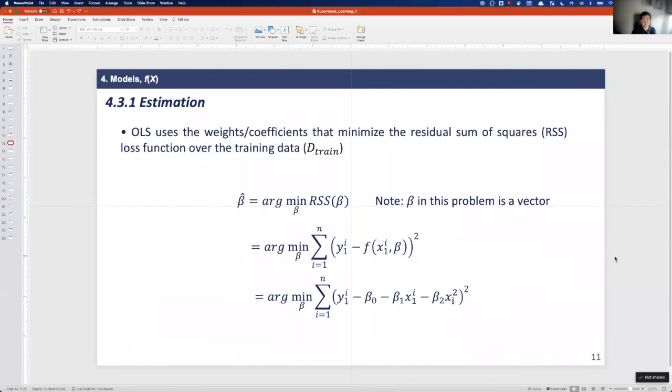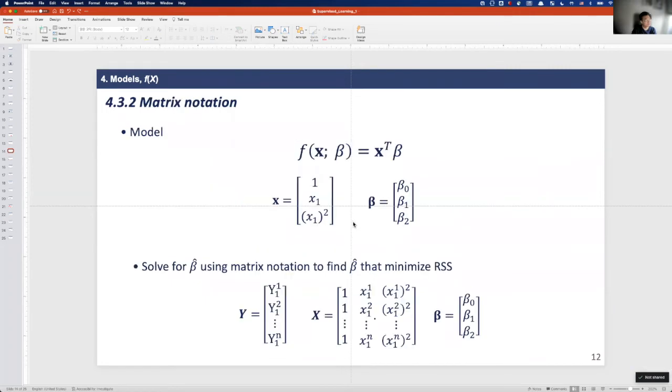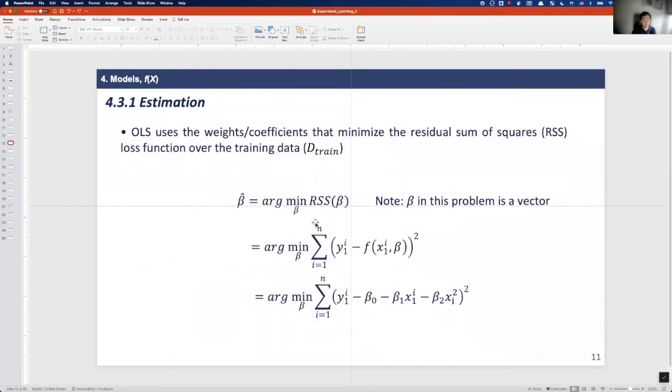First, I believe the matrix notation always allows us to understand big data and make it easy to estimate parameters. Here we have a size of 3 by 1 vector. To find the better parameters which minimize the residual sum of squared loss, we need to estimate the beta values.